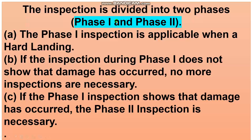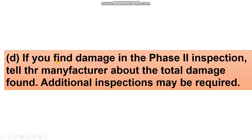This is the explanation of the Load 15 report, with red circles showing the event: radio altimeter descent rate at touchdown of 15.5 feet per second and maximum vertical acceleration of 3.04 G. For inspections, there are two phases. Phase one is a visual inspection. If phase one shows no damage, no further inspection is necessary. If damage is found in phase one, phase two inspection is required. If damage is found in phase two, notify the manufacturer, who may require additional inspections.